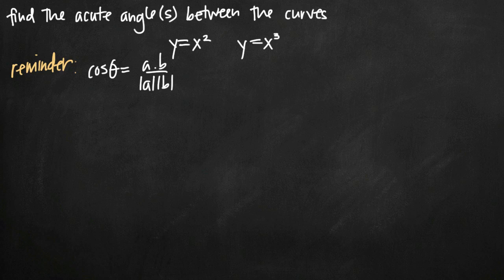Today we're going to be talking about how to find the acute angles between two curves. In this particular problem, we've been given two curves represented by the equations y equals x squared and y equals x cubed. If you've already watched my video about finding the acute angles between two lines, you have a leg up on this video already, because the process we're going to use for finding the angles between two curves is going to be really similar to the process for finding the angles between two lines.